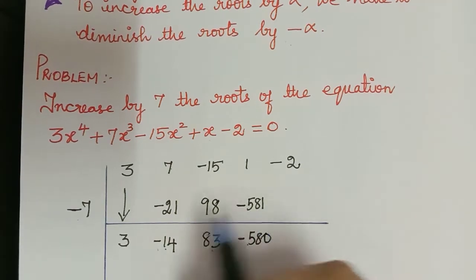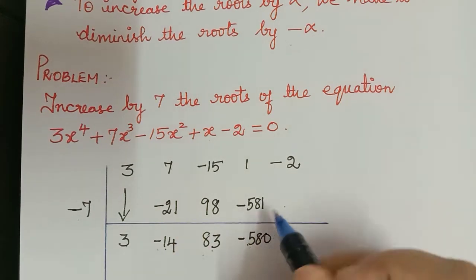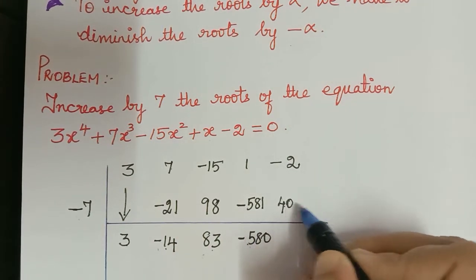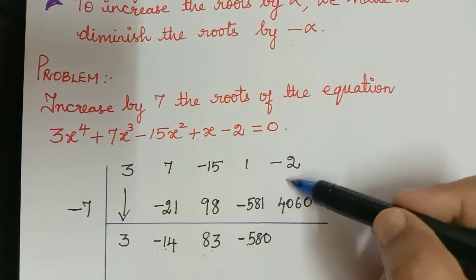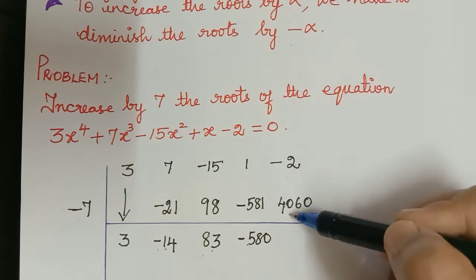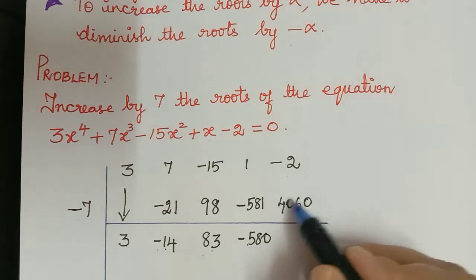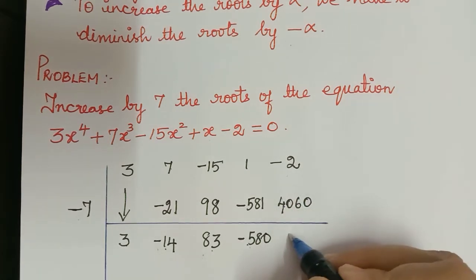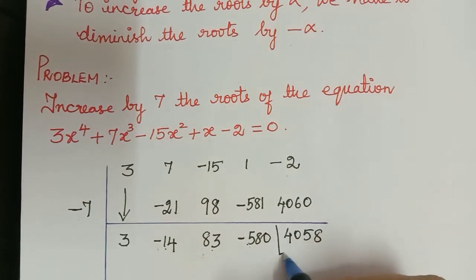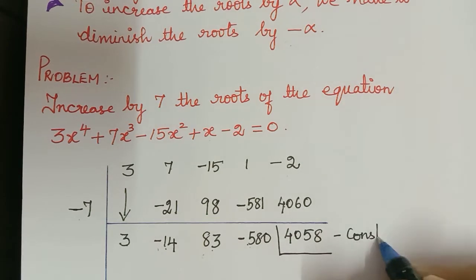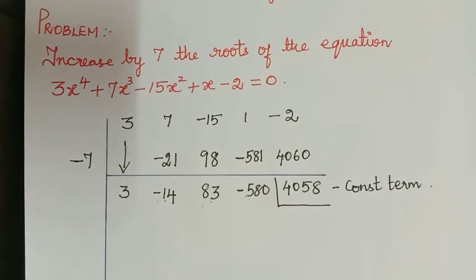Negative sign multiplied with negative sign will be positive, and 7 multiplied with 580 gives us 4060. Now we have negative 2 plus 4060, so we subtract and it will be positive because the larger number has a positive sign, giving us 4058. So this is the constant term of the required equation.